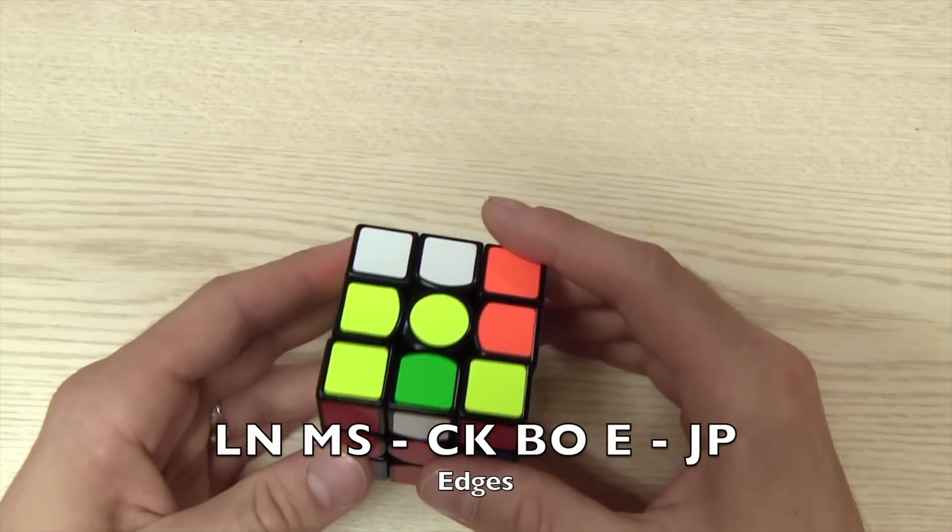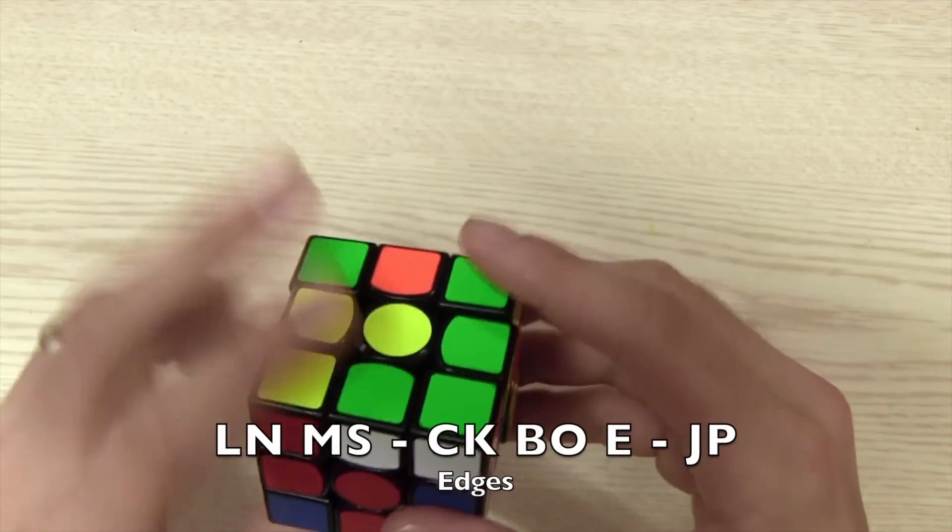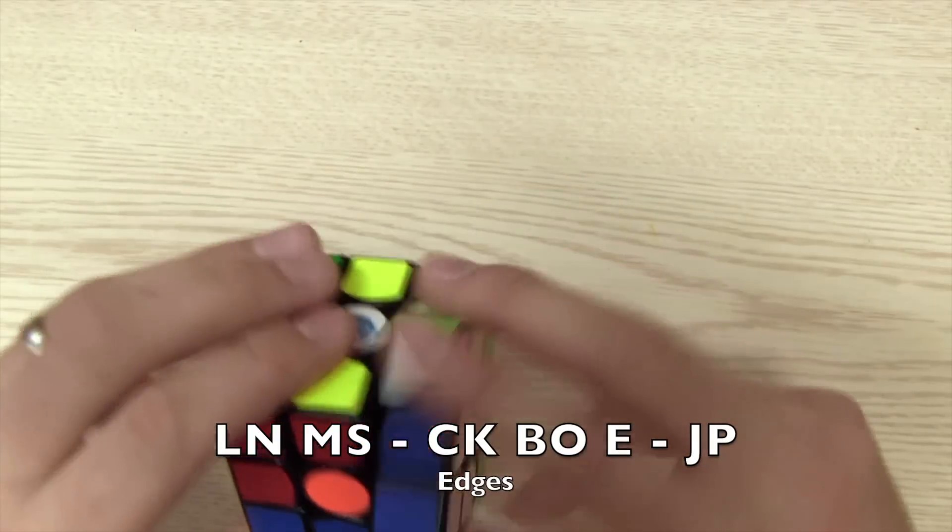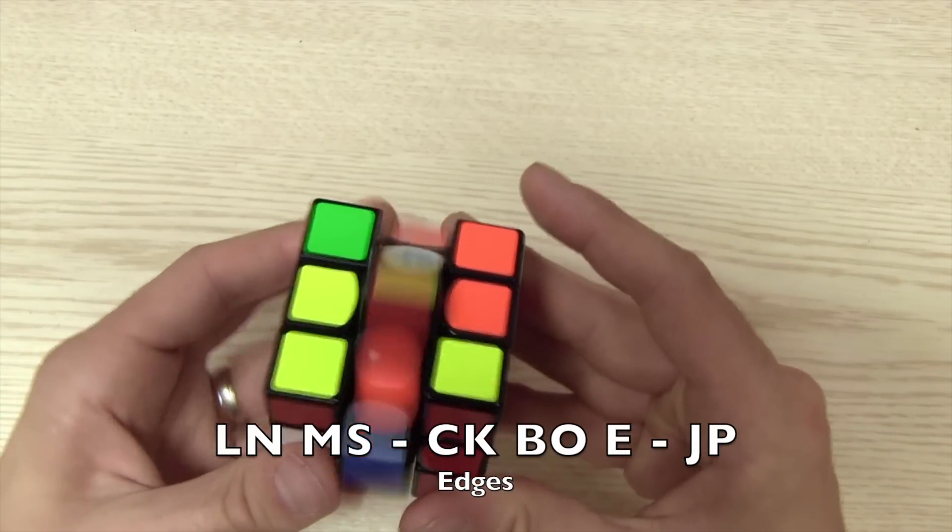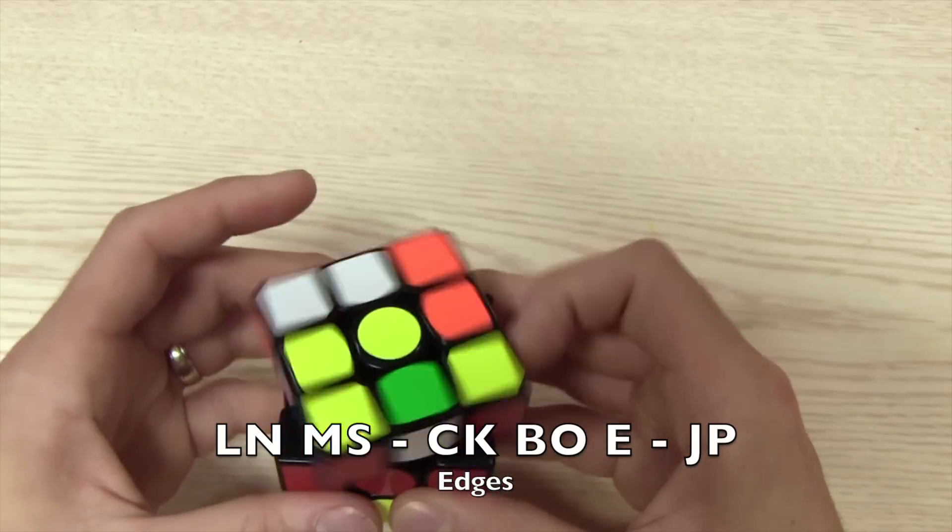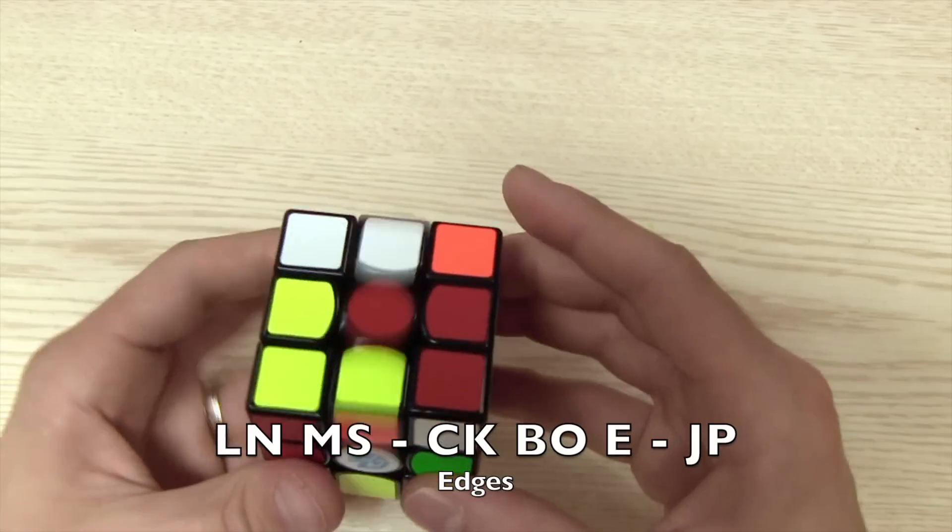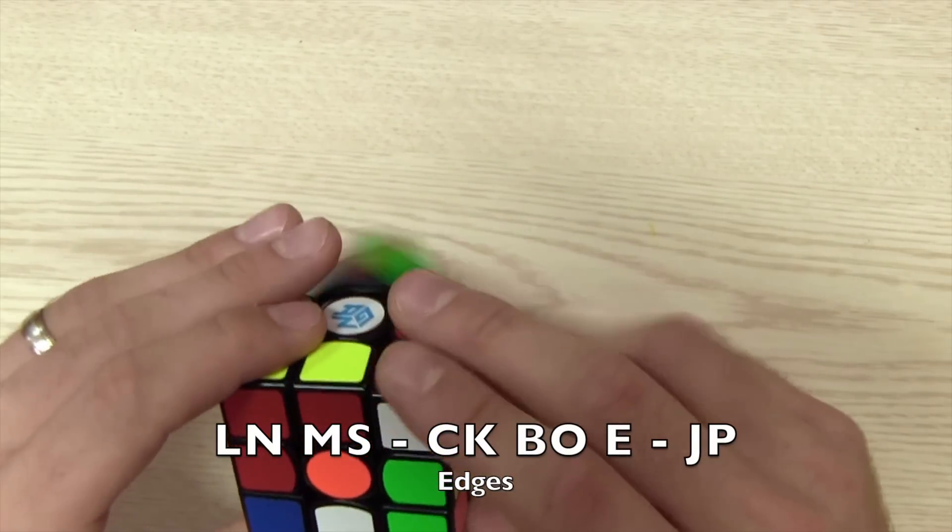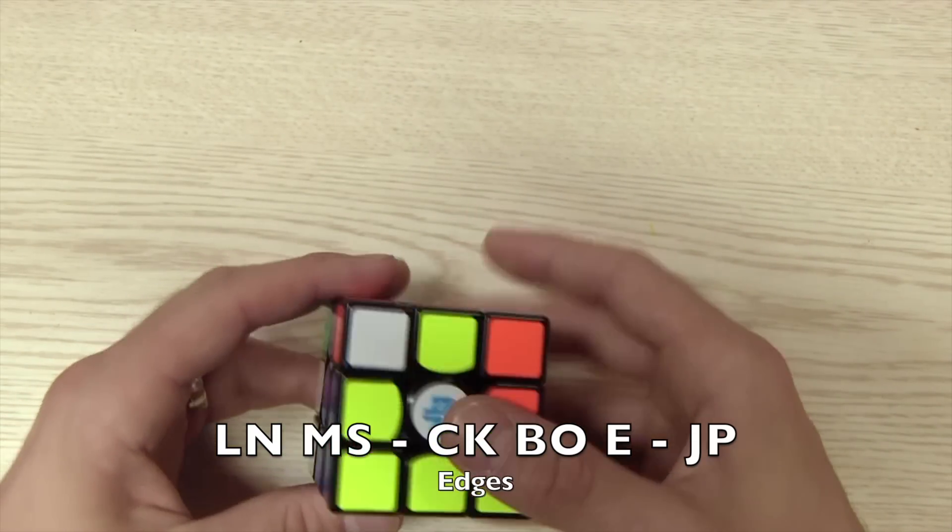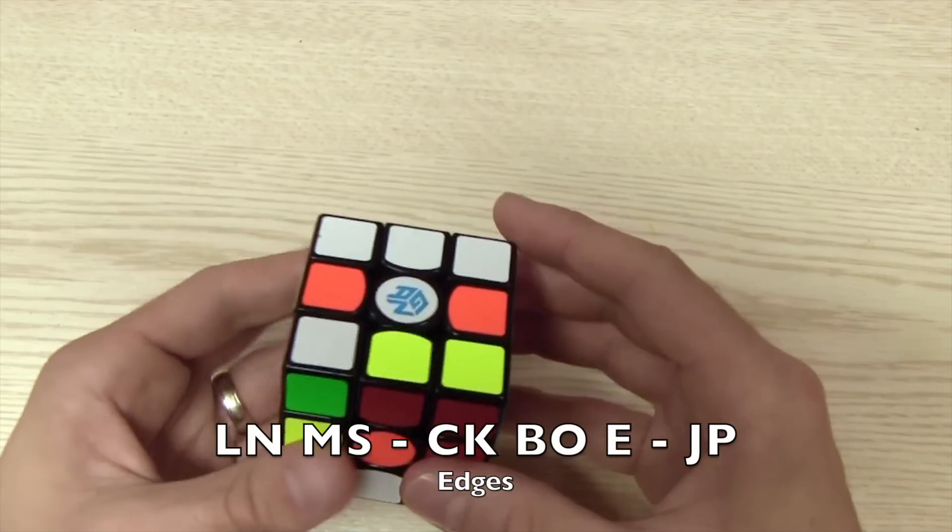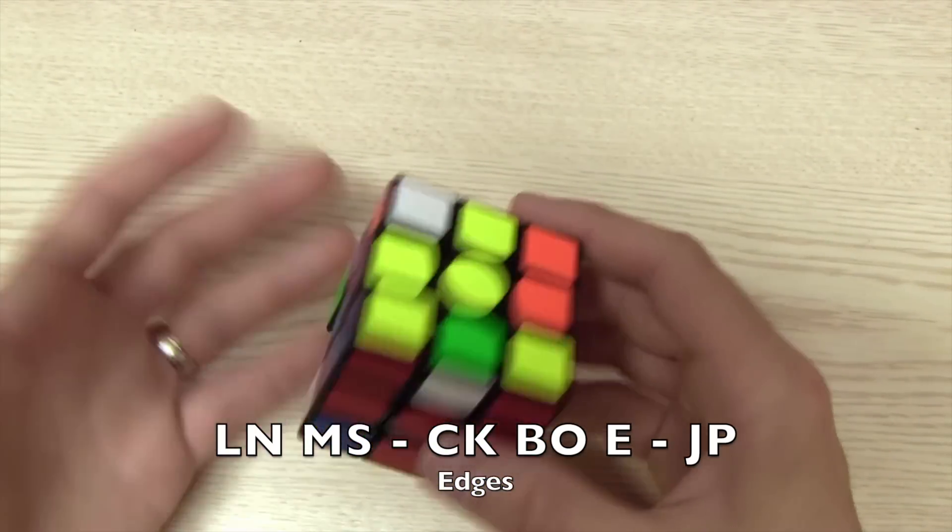So first we're going to do L. So we set up L, M2, and then reverse that setup. Then we have N. And we're going to reverse that setup. And then M, we have that longer setup. And then reverse it. And then we have S. So S. And then this is where we reached our bank piece.